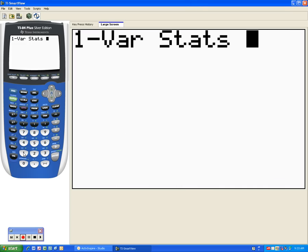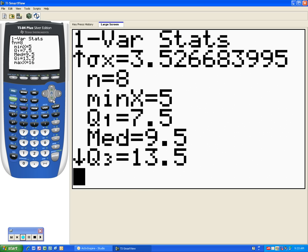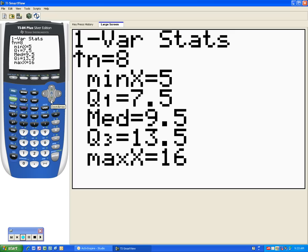Okay, now it says one variable stats on the screen. Nothing to do here. If we typed our numbers in list one, all we have to do is hit enter. Now the five numbers that we want are not on the screen that we see at this time. What we're gonna do is we're gonna scroll down all the way with our down arrow until it won't scroll any further.